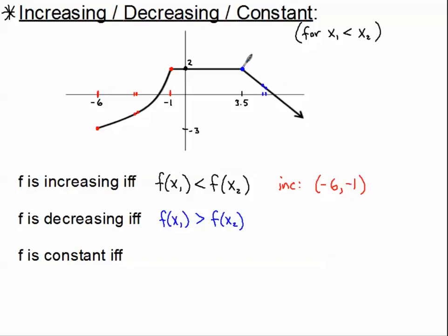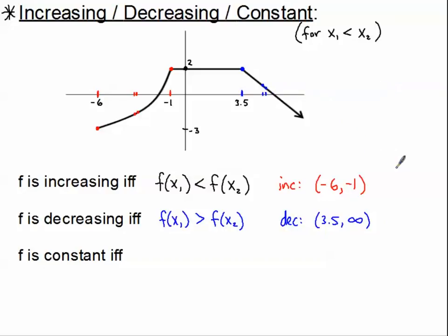So we're starting on the x-axis to decrease right here at 3.5, and we never stop. So when we're decreasing, the interval to describe that is we start at 3.5, and we go all the way up the x-axis to infinity. That's when our graph will be decreasing this way. So we've got increasing, we've got decreasing, and now we've got constant.